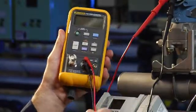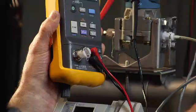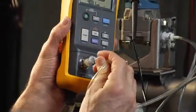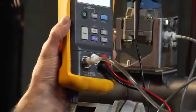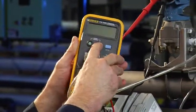Connect the test leads from the output of the 719 to the power connections on the transmitter. Then make a pneumatic connection between the input of the transmitter to the output of the 719. Power up the transmitter with the loop power supply.